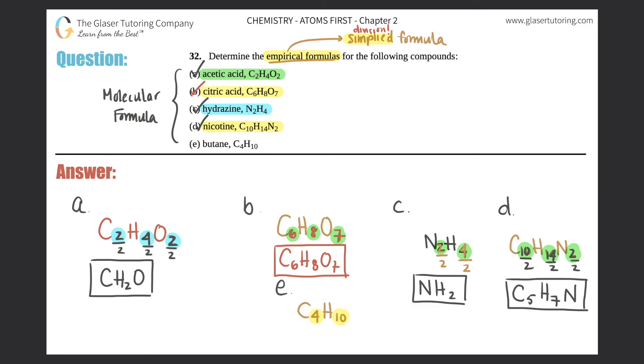Is there a common number between four carbons and ten hydrogens? I could divide each one by two: C2H5. Between two and five, there's no number divisible by both, so that's your empirical formula for butane.